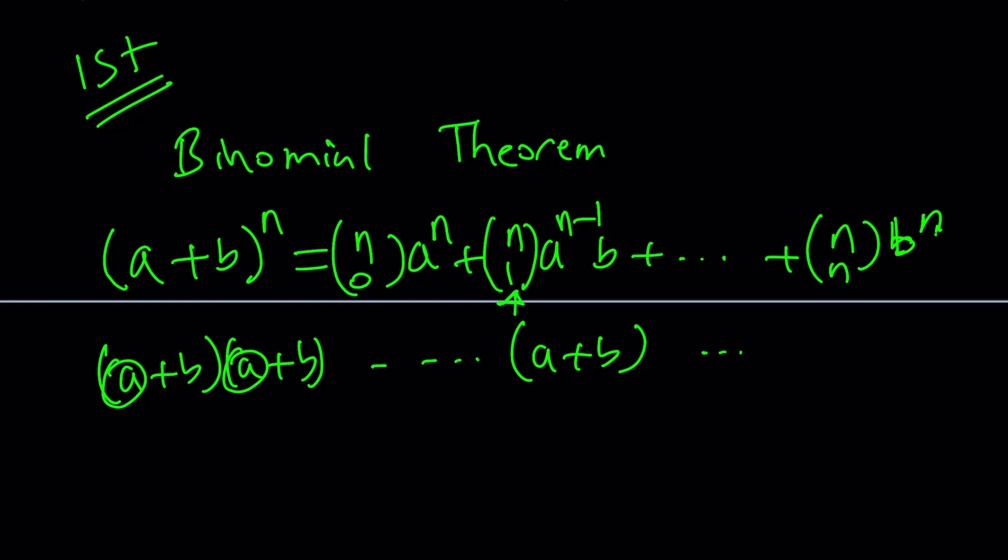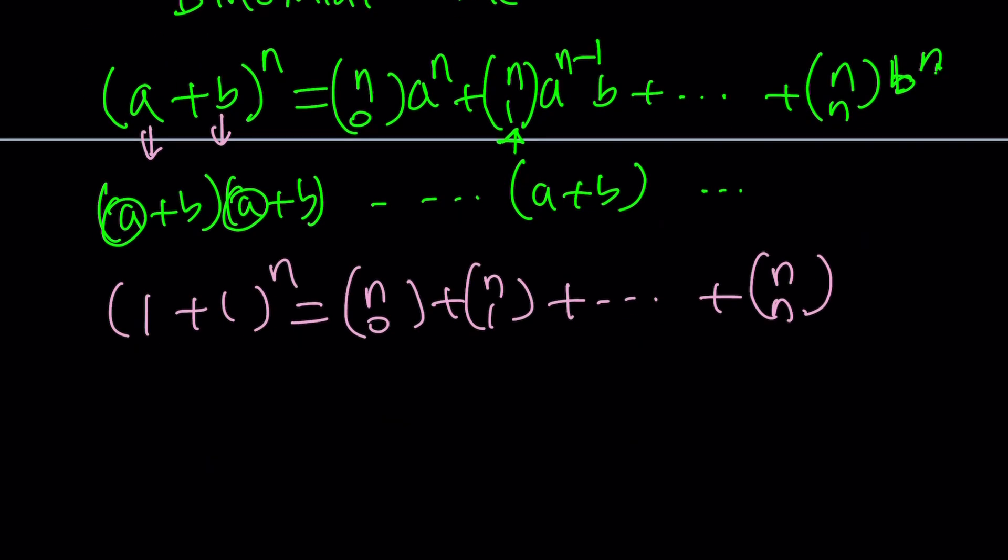For example, one of the really nice applications of the binomial theorem is if you replace A and B both with 1 you get 1 plus 1 to the power n which gives you n choose 0 plus n choose 1 all the way up to n choose n and this is actually equal to 2 to the power n because 1 plus 1 equals 2. It's as simple as that. So if you add all the binomial coefficients you get that because each represents the number of subsets of an element with n elements and so on and so forth. You can replace B with minus 1 and then you'll get 0 so on and so forth.